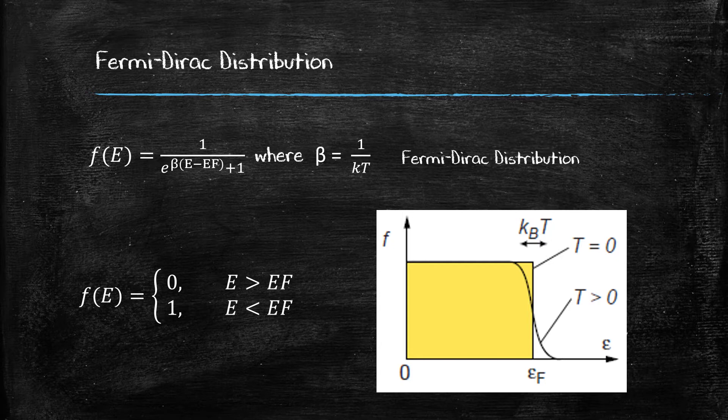But when the temperature is not absolute zero, the probability of finding the electron below the Fermi energy becomes less than one, and the probability of finding the electron above the Fermi energy becomes more than zero. In other words, the increasing temperature has a probability of exciting the electron above the Fermi energy level. The energy occupation of the states around the Fermi energy can be described by a widening of the step probability by a factor of kBT.